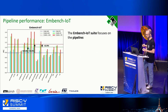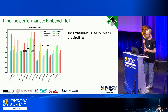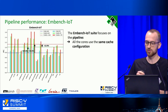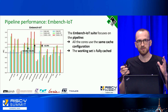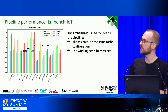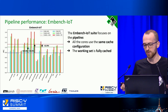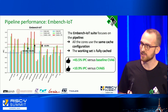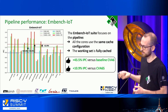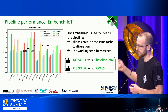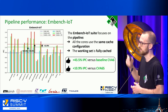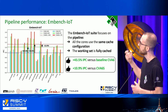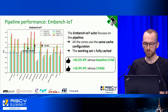To evaluate the pipeline performance improvement, we return to the MBench IoT suite with the same cache configuration and fully warmed caches — ensuring no misses — so all benefits come purely from pipeline improvements. We see 43.5% improvement over the scalar CVA6 version and almost 11% improvement over the original superscalar CVA6S version we started from.